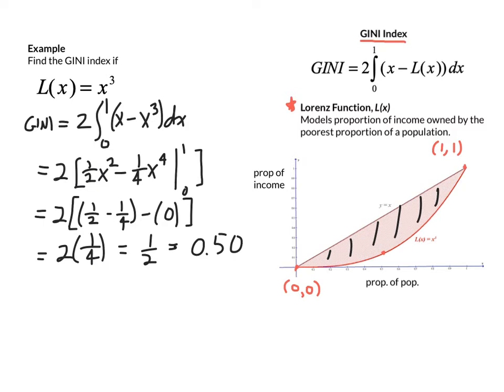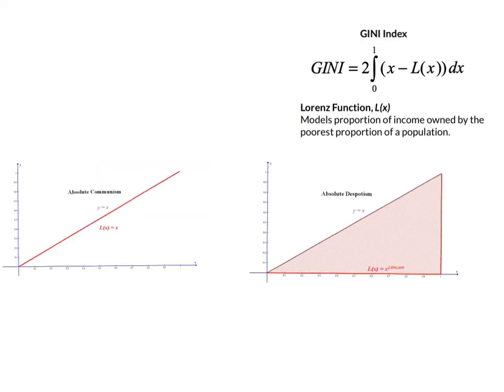So it turns out that the Gini index is always going to be a value between 0 and 1. When you go to interpret the Gini index, it's going to be between 0 and 1. And let's just look at the two extreme cases here, and bring some graphs in.